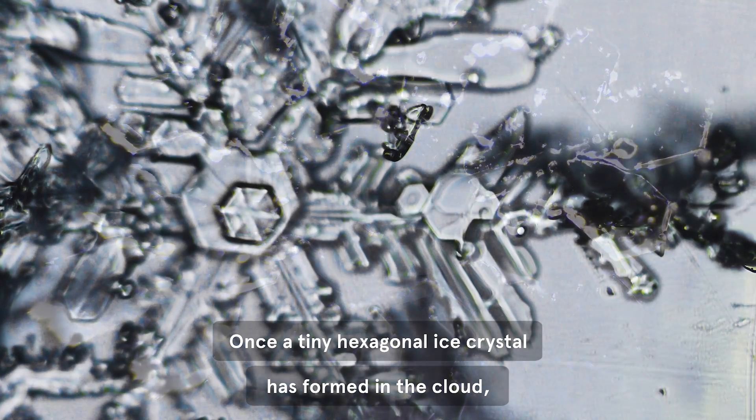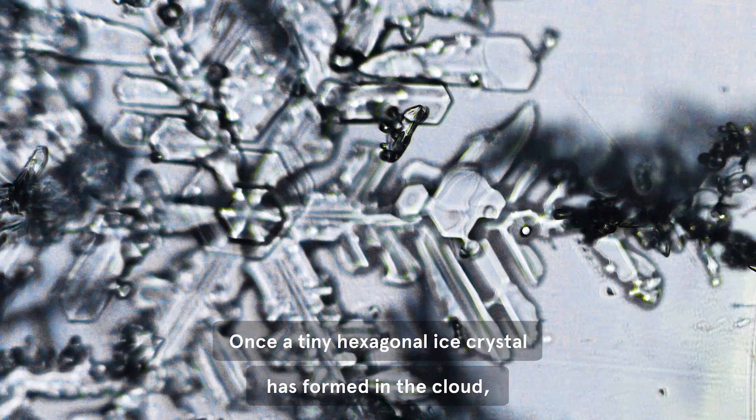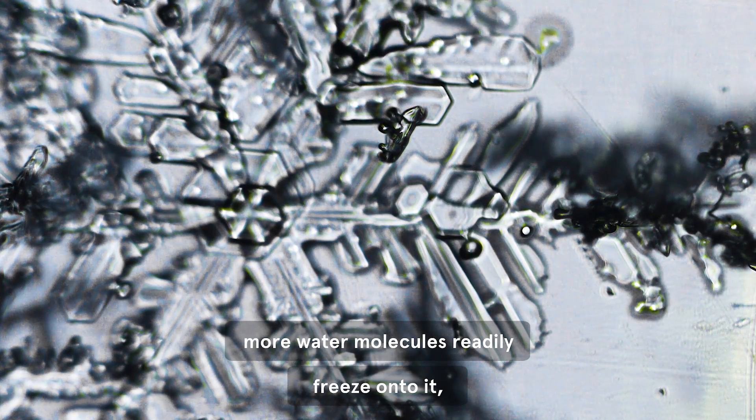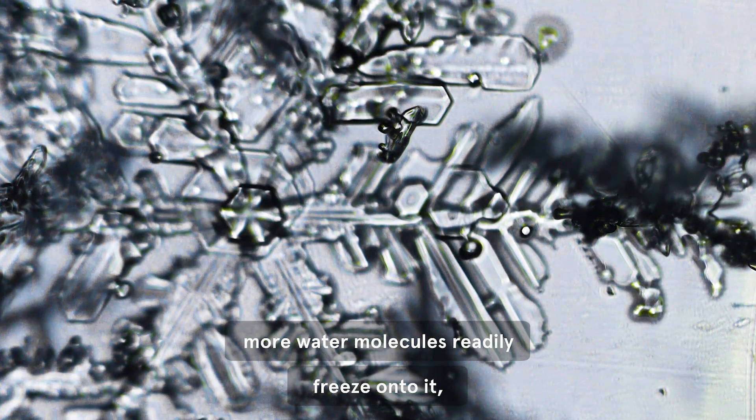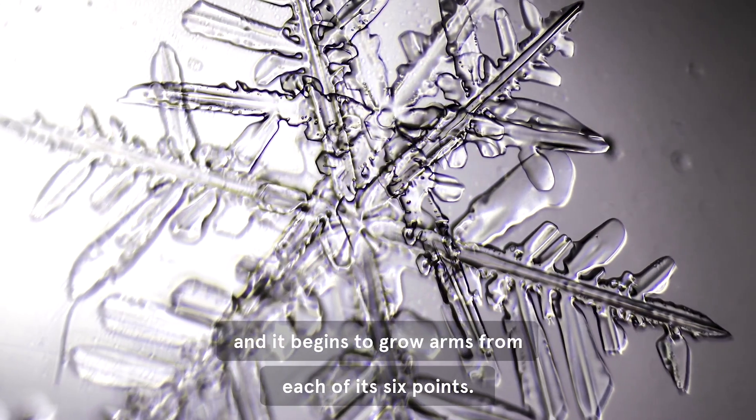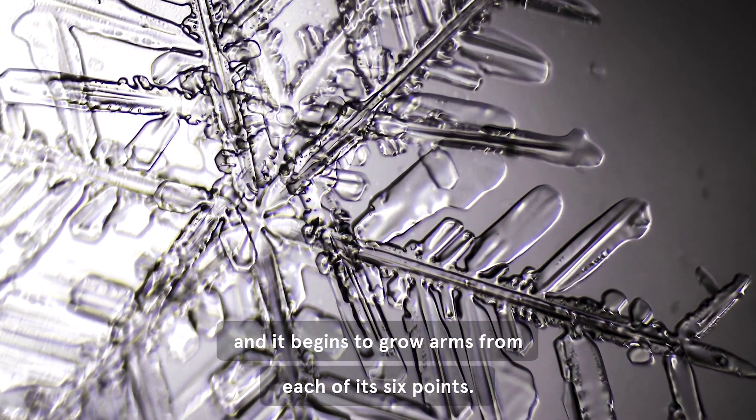Once a tiny hexagonal ice crystal has formed in the cloud, more water molecules readily freeze onto it, and it begins to grow arms from each of its six points.